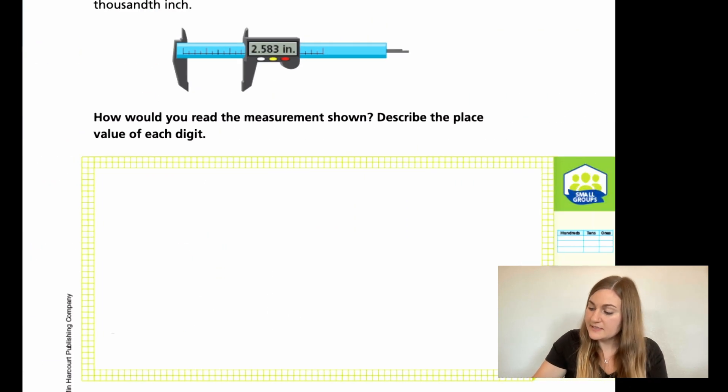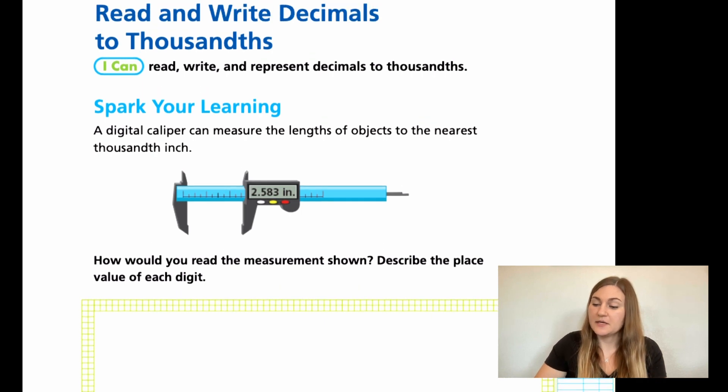So moving into the lesson, we're on page 323. We see a problem that says a digital caliber can measure the lengths of objects to the nearest thousandth inch, and it says 2.583 inches. The question says, how would you read the measurement shown? Describe the place value of each digit.